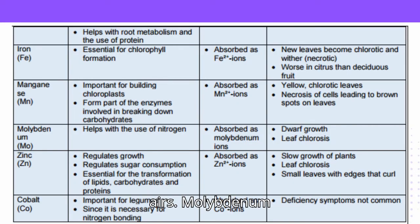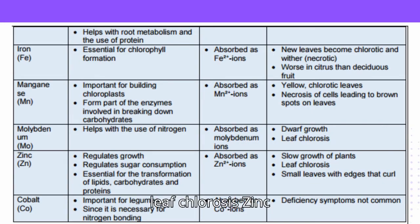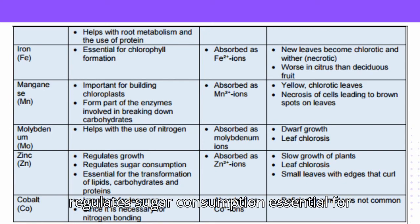Molybdenum (Mo): Helps with the use of nitrogen. Absorbed as molybdenum ions. Deficiency symptoms: dwarf growth and leaf chlorosis.